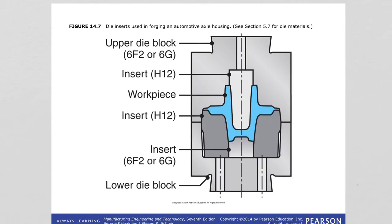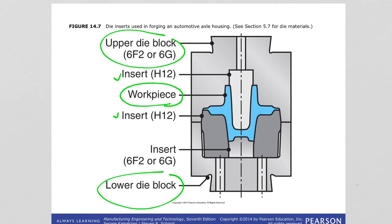Instead of being made as one piece, forging dies may be made from two or more pieces with die inserts — you have the upper die block and lower die block with inserts to shape the part. The inserts can easily be replaced in case of wear or failure in a particular region, whereas replacing the whole die is more difficult. Inserts are usually made of stronger, harder, and more wear-resistant materials than the dies themselves.